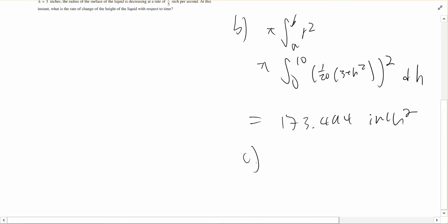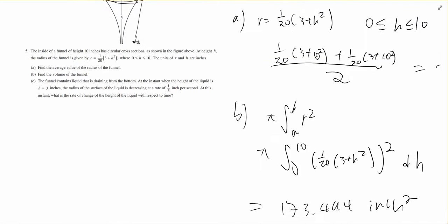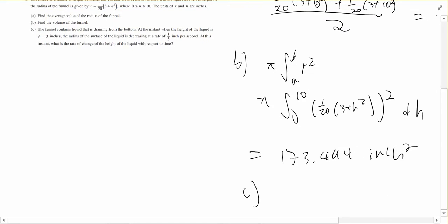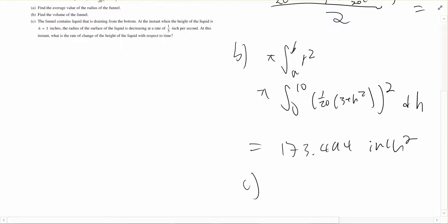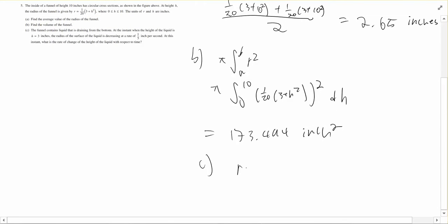Let's move on to number C. Part C is asking for the rate of change of the height with respect to time, given that the liquid is decreasing at a rate of 1 over 5 inch per second and at height equals 3. What we want to do is break this equation down into 2 parts because we want to take the derivative of the radius function with respect to height.